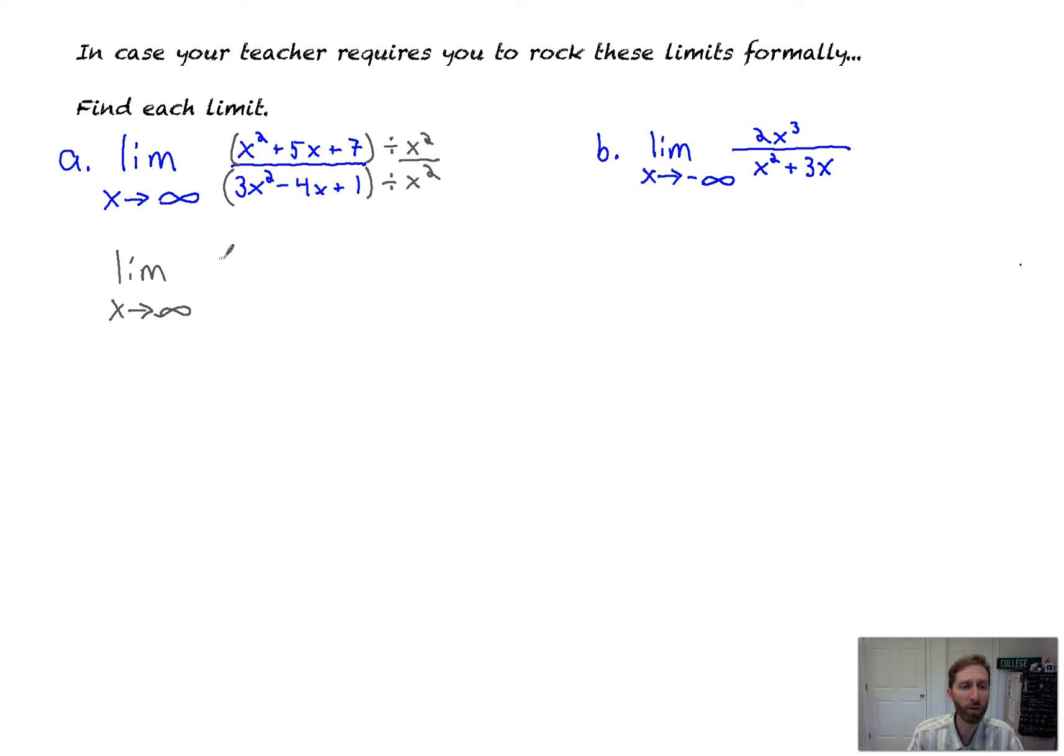Okay, so now x squared over x squared is what we get. And I'll show you out step by step. x squared divided by x squared plus 5x over x squared plus 7 over x squared. That's just divided by x squared. That's all. All over 3x squared over x squared plus, minus, would help if I could copy correctly, minus 4x over x squared plus 1 over x squared. Again, all I did is divide every single term by x squared. And that's allowed.